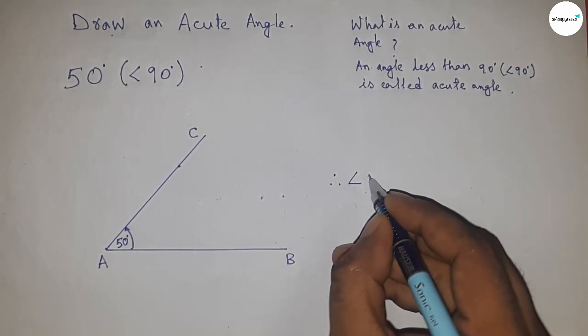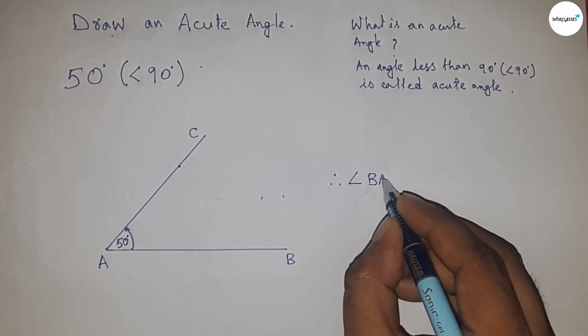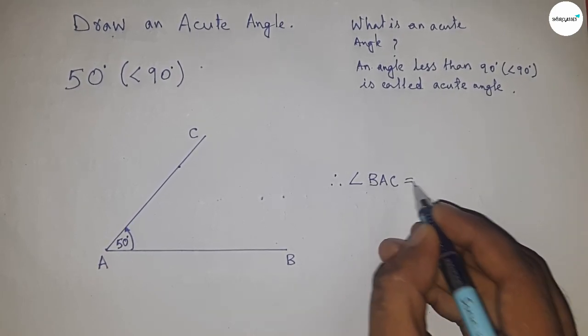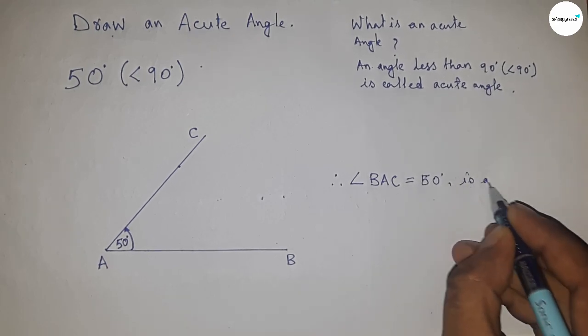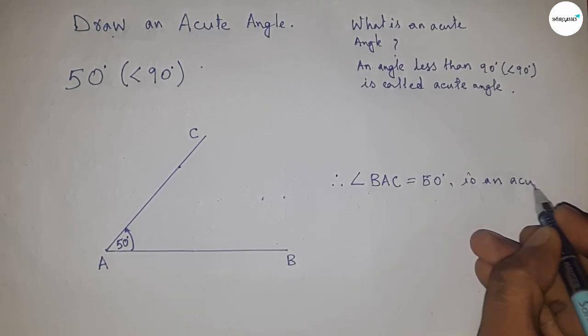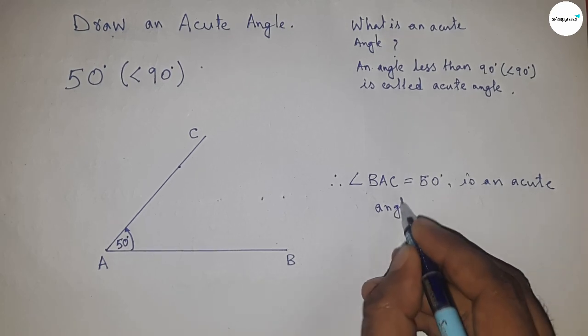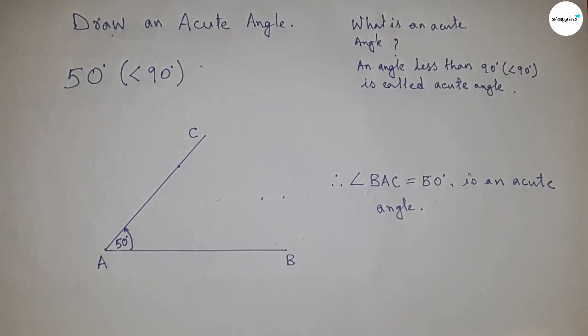Therefore, angle BAC equals 50 degrees is an acute angle. Obviously it is an acute angle since 50 degrees is less than 90 degrees. That's all. Thanks for watching. Please subscribe, like, and comment on my video.